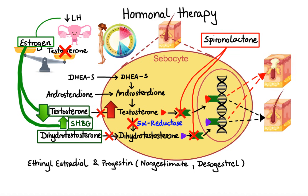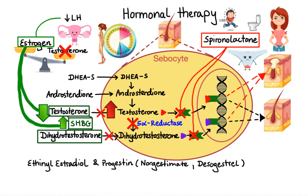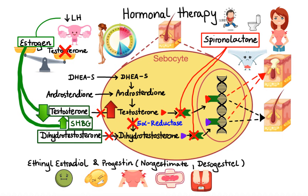When it comes to side effects, spironolactone can cause increased urination, irregular periods, and breast tenderness. On the other hand, side effects of oral contraceptives can include nausea, headache, breast tenderness, breakthrough bleeding, weight gain, and increased risk of blood clots. And with that, I wanted to thank you for watching — I hope you enjoyed this video and, as always, stay tuned for more!